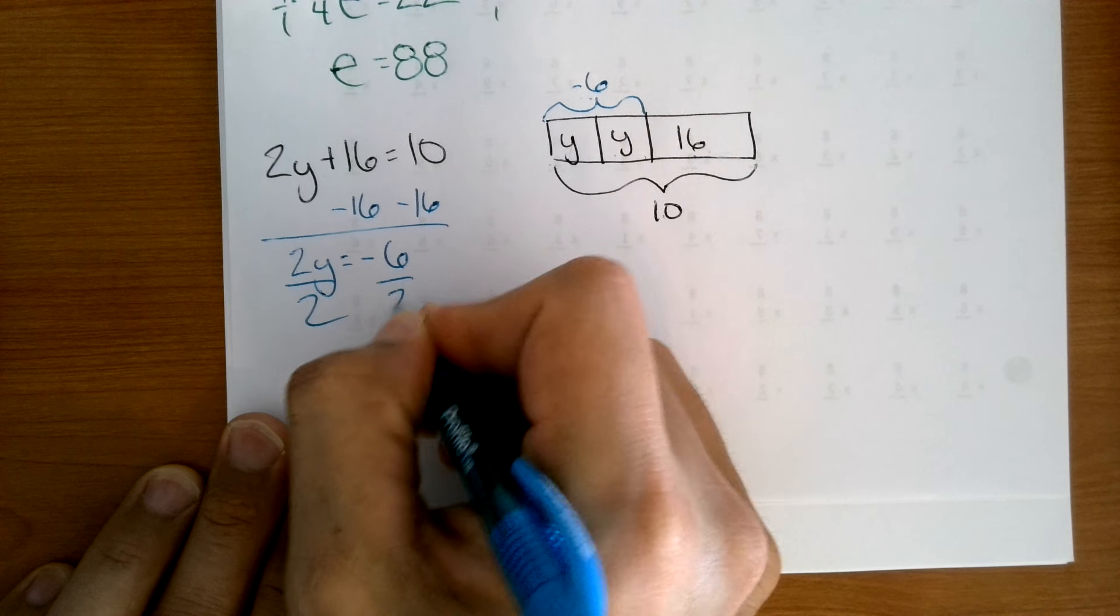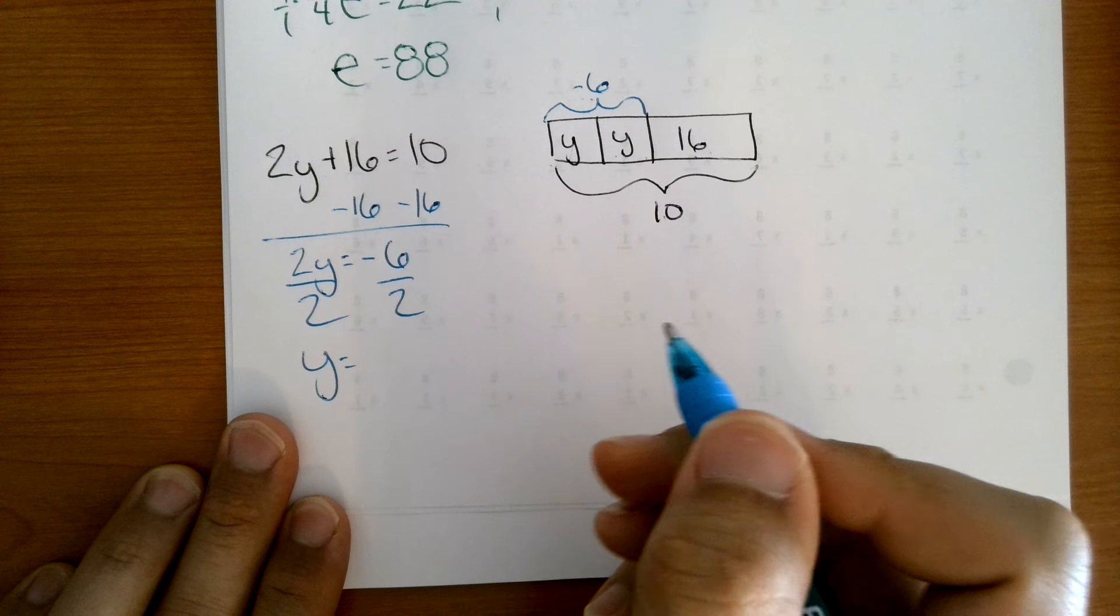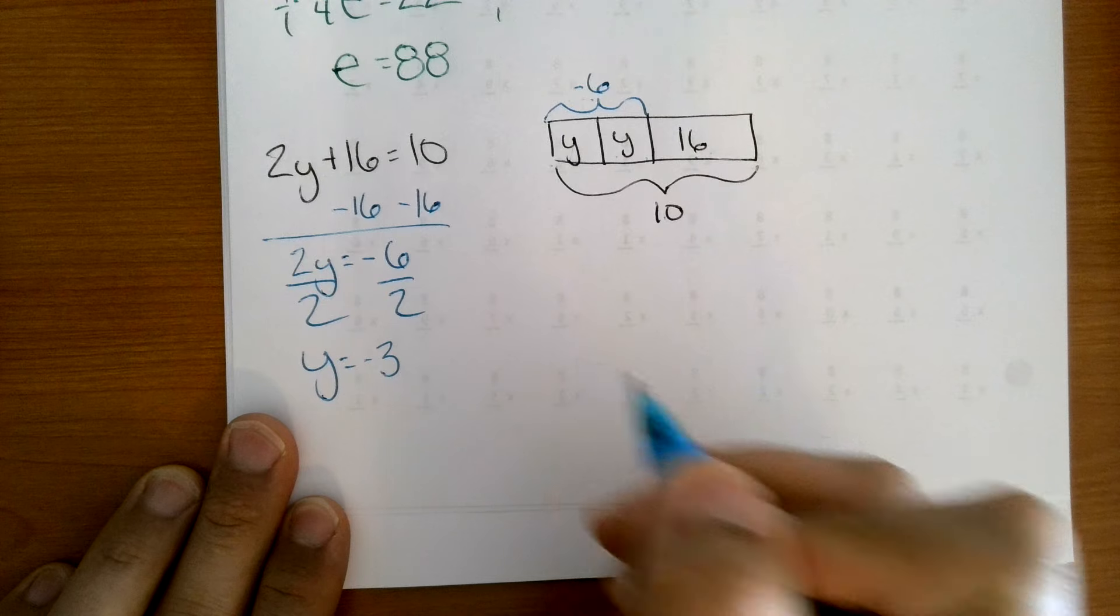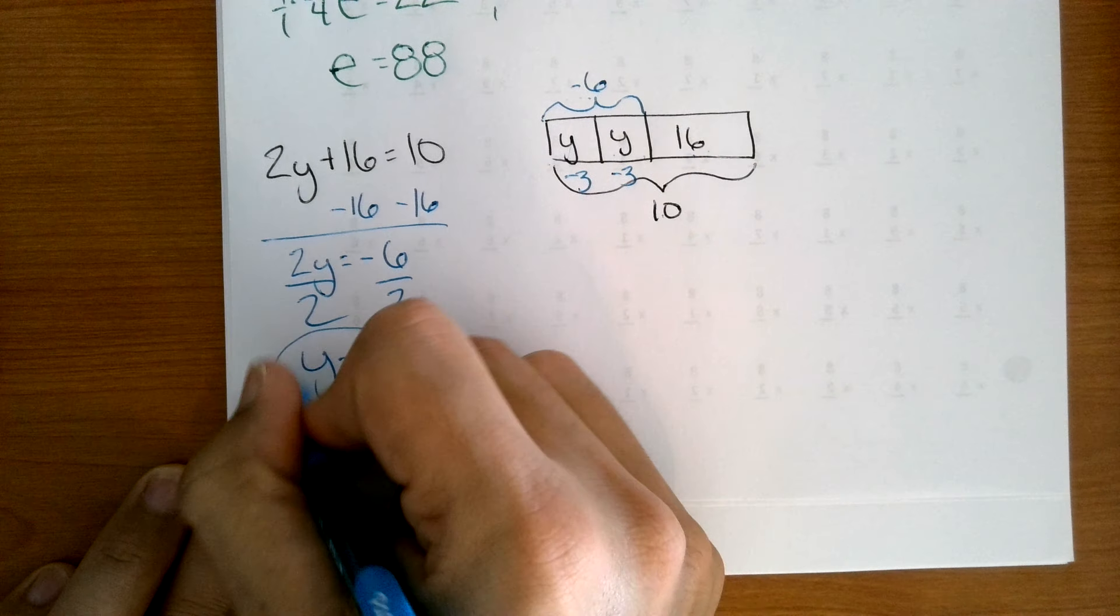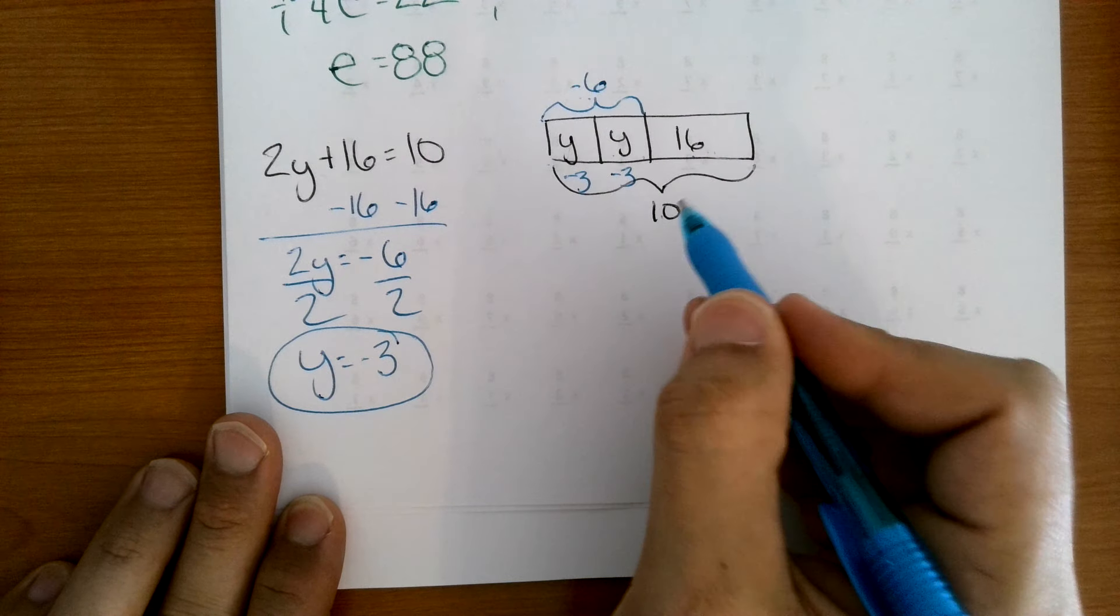We split those in half by dividing it by 2, and y equals negative 3. This would equal negative 3. This would equal negative 3. Combined, they equal negative 6. Add 16, it equals 10.